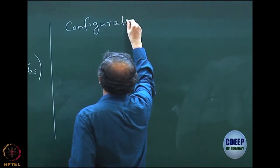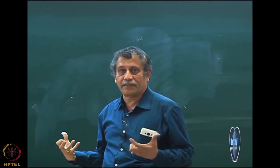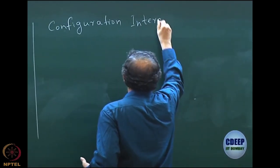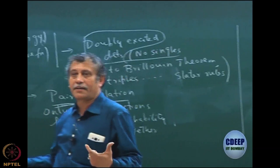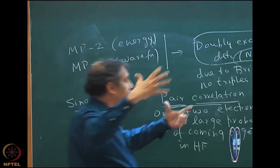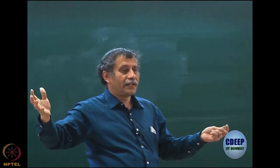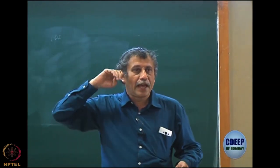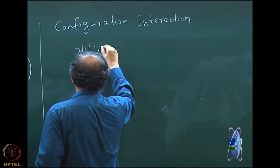The perturbation theory and configuration interaction are the two major electron-correlated theories to start with. It is the interaction of the configurations which leads to improvement of the Hartree-Fock. This is something we already discussed: if I have m virtual orbitals I can have mCn determinants, and the full wave function is a linear combination of all the mCn determinants. We have taken an example by considering a two-particle function, say ψ(1,2).